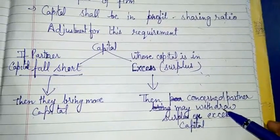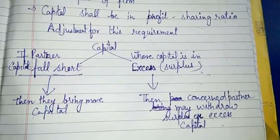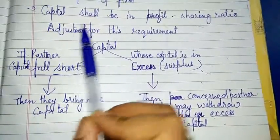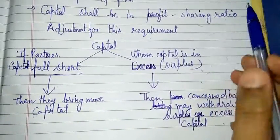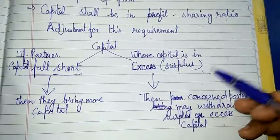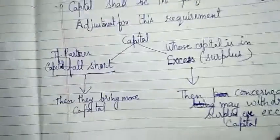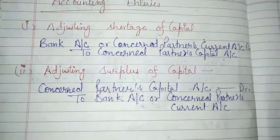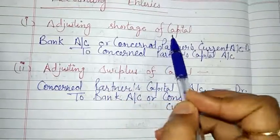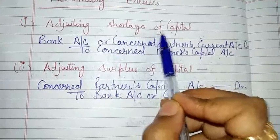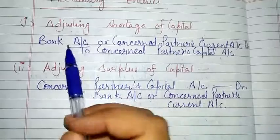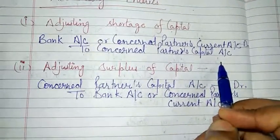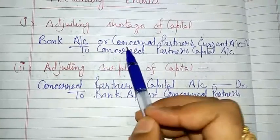जब भी आप partnership में Adjustment of Capital का question आएगा, यह आपको complete question के साथ ही मिलेगा, तो घबराने की ज़रूरत नहीं है। आपको normally question वैसे ही solve करना है। या तो आपको goodwill की adjustment होगी या capital की adjustment होगी। Revaluation account बनाने के बाद sacrificing ratio और gaining ratio calculate करोगे। जिस partner की capital में कमी है, उस partner से cash और मंगवाया जाएगा — entry होगी: Bank Account Dr. to Concerned Partner's Capital Account.